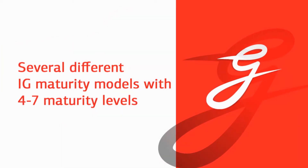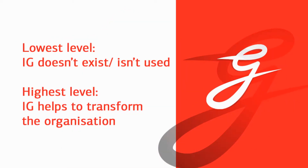Hello. Today's topic is information governance maturity model. There are many information governance maturity models in existence. They usually have four to seven maturity levels, with the most common being five levels. The logic behind them is quite similar: on the lowest level, information governance doesn't exist or is not being used, and on the highest level, information governance will help an organization to transform itself.